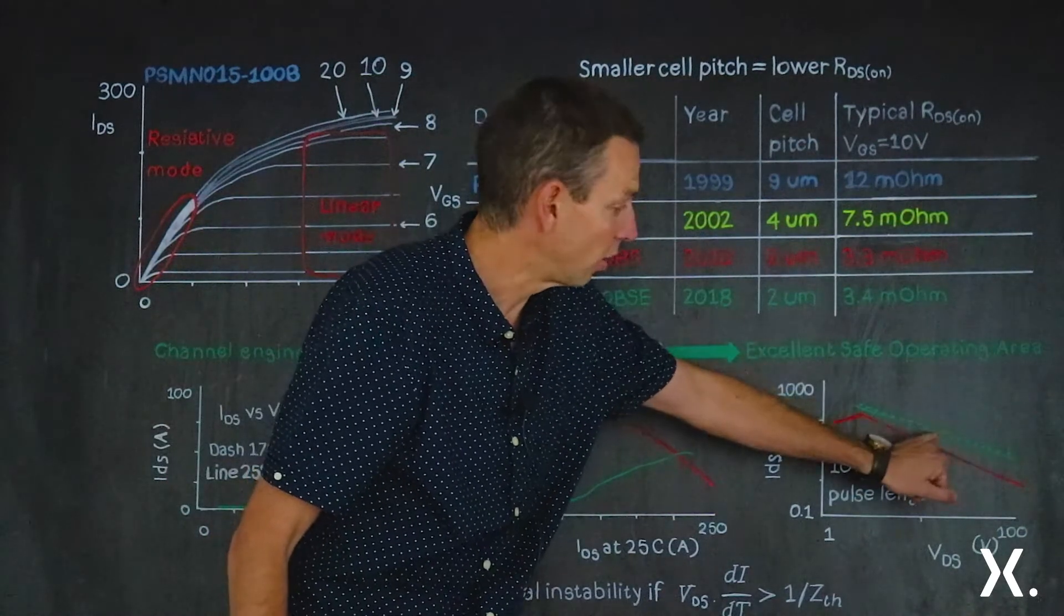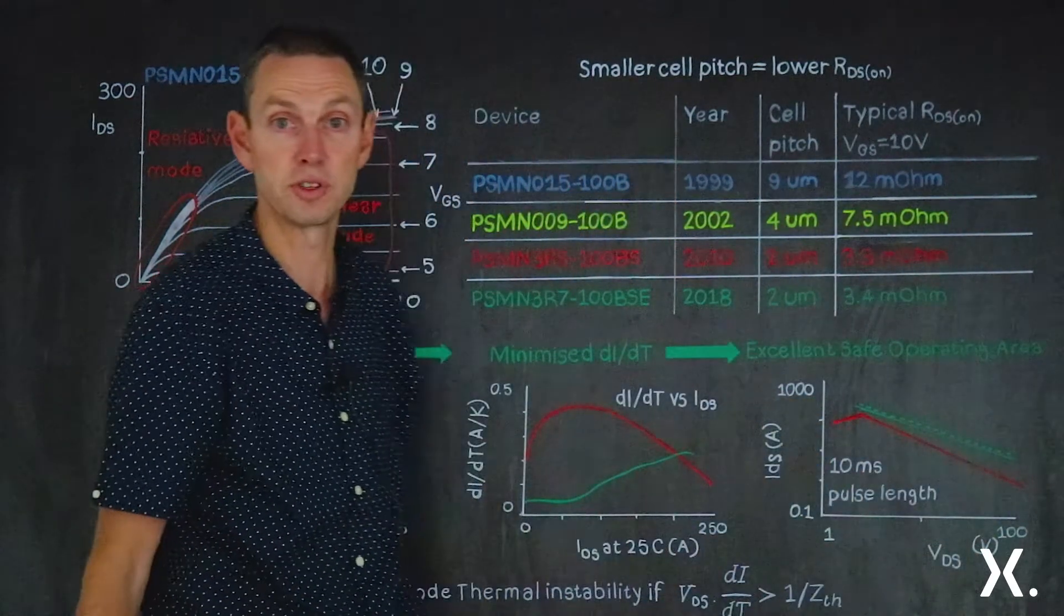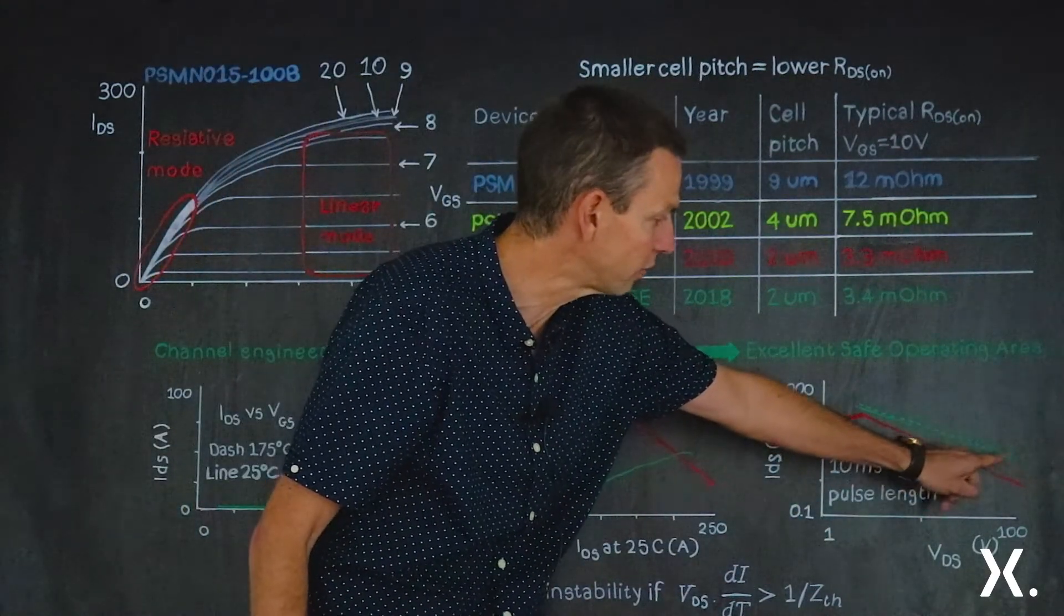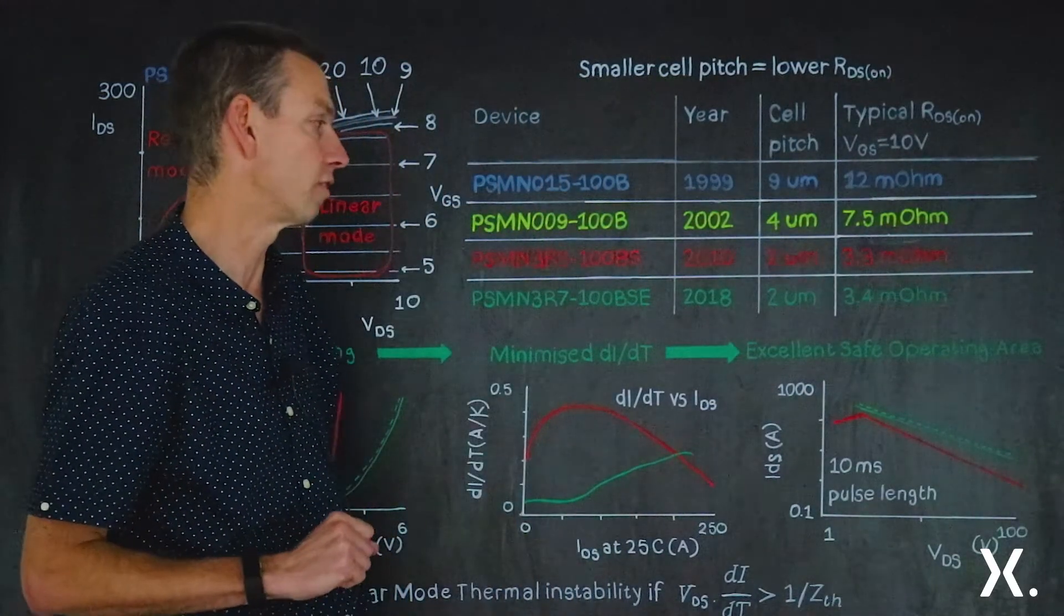And in actual fact, with this device, virtually all the way up to 90 volts, we get the full entitlement of the safe operating area. Just around about 90 volts, between 90 volts and 100 volts, the safe operating area has to be slightly derated, but it's a very small derating.